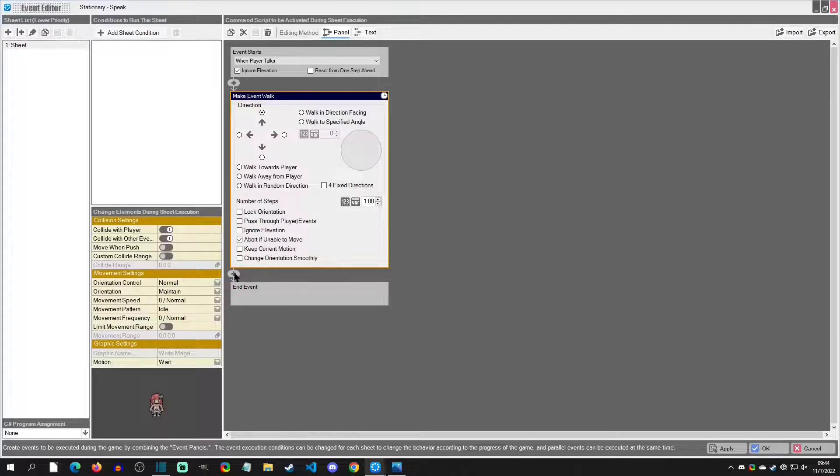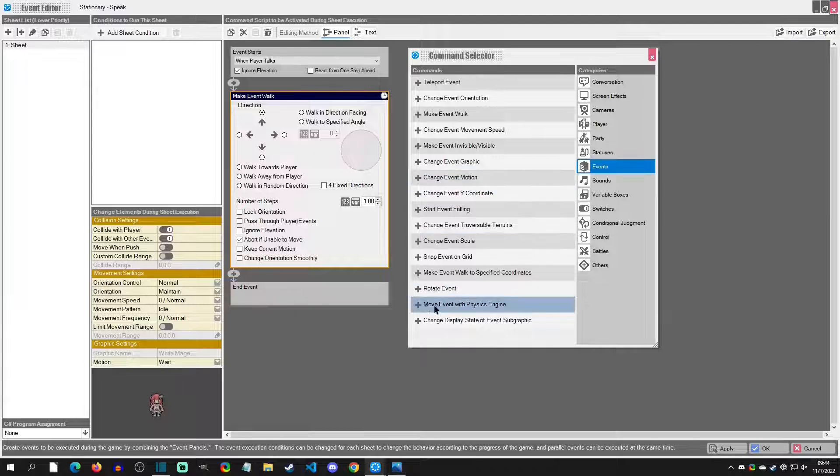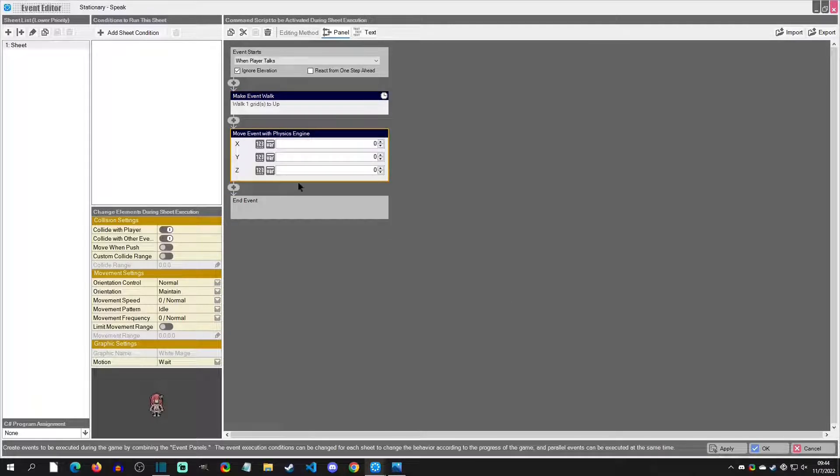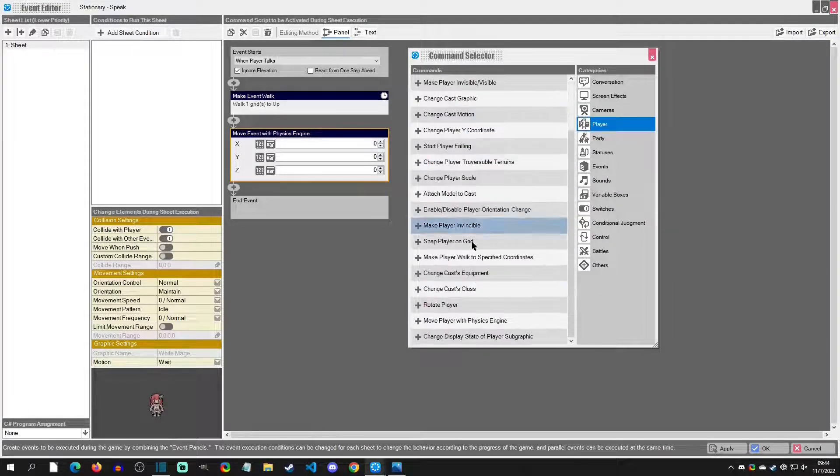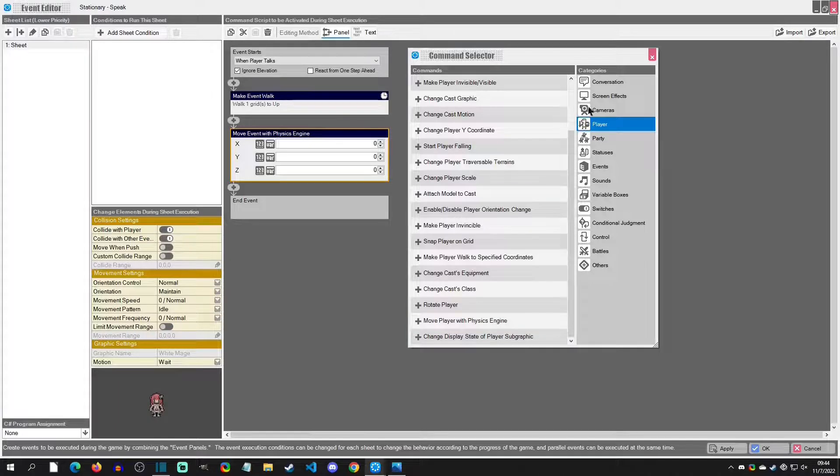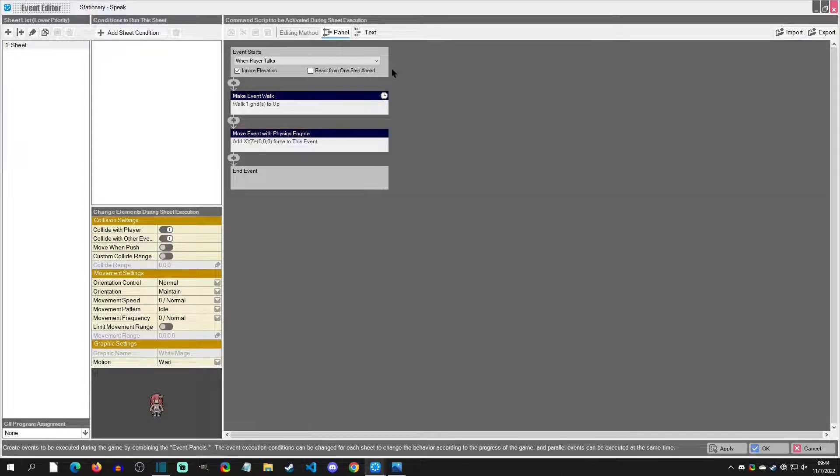The other thing is if you go to events, you'll have a move event with physics engine and you'll see the coordinates right here, but you might not understand how the force applies to it. So these are the two specific things we're going to go over. Just note that player has this as well - make player walk and move player with physics engine - so you'll be able to understand both of those once we go over these.